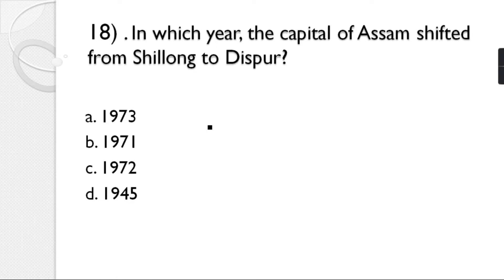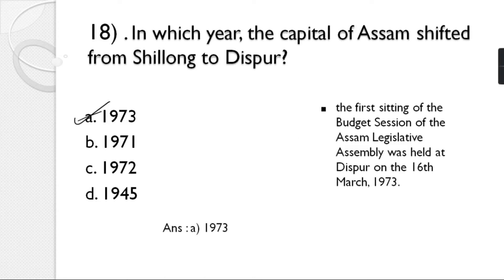Question number 18: In which year was the capital of Assam shifted from Shillong to Dispur? Options: 1973, 1971, 1972, 1945. The correct answer is option A — 1973. The first sitting of the budget session of the Assam Legislative Assembly was held at Dispur on 16th March 1973.